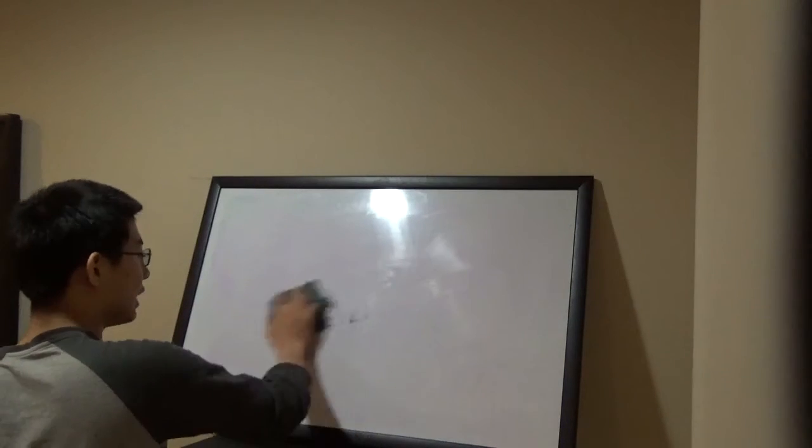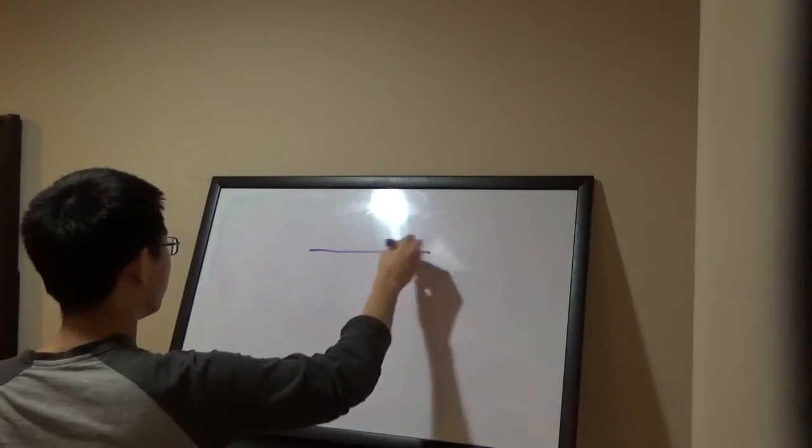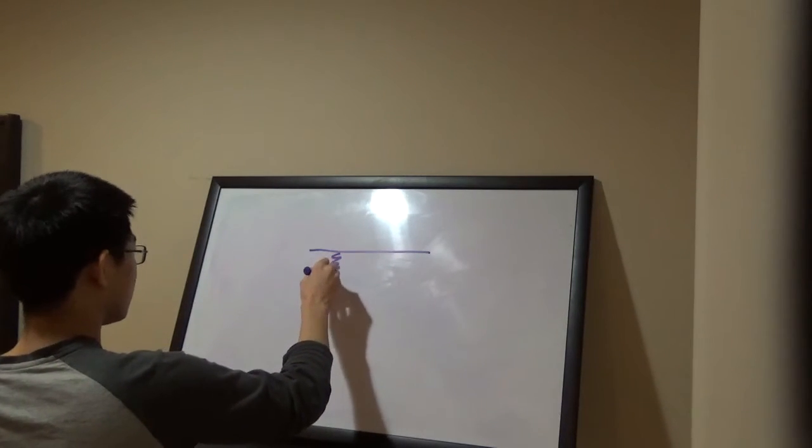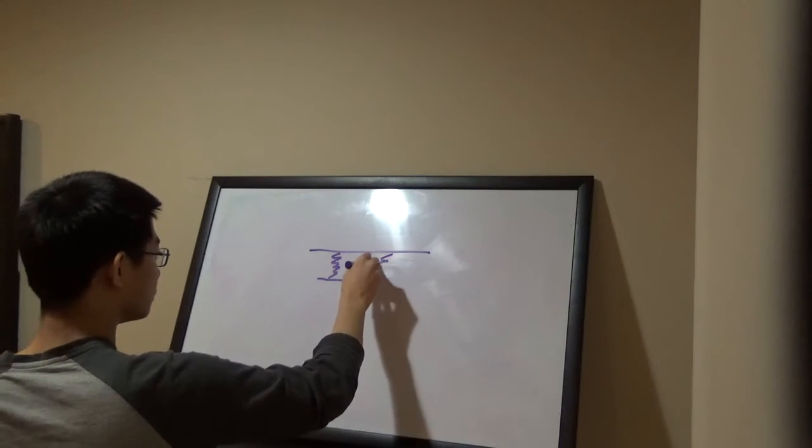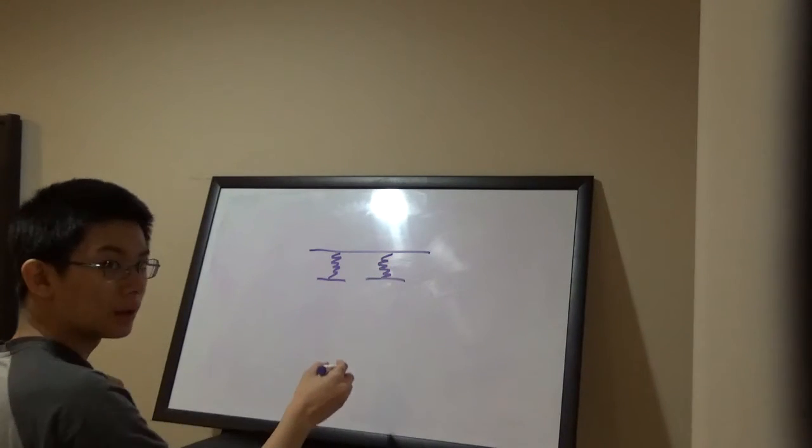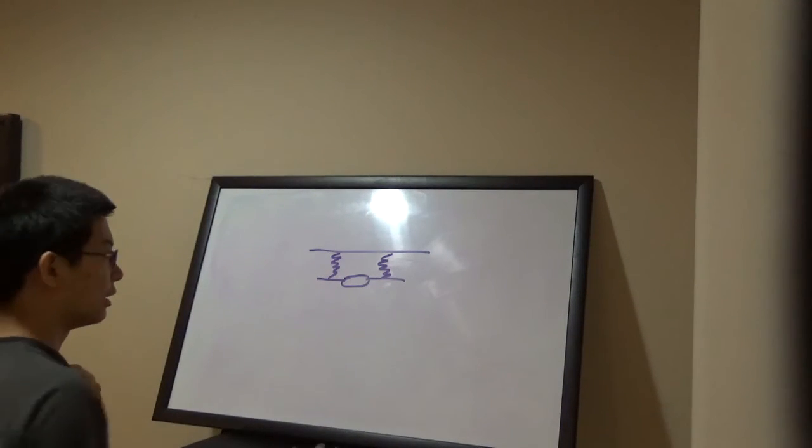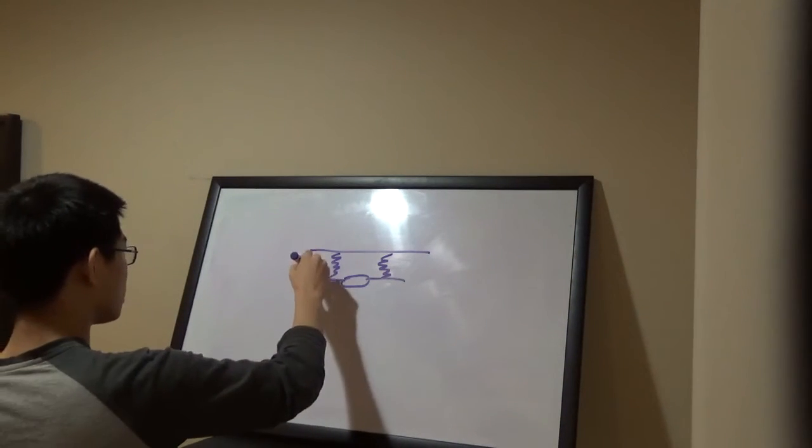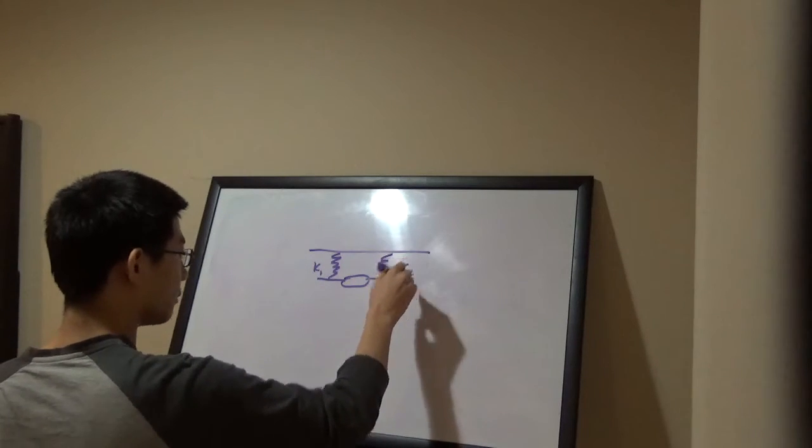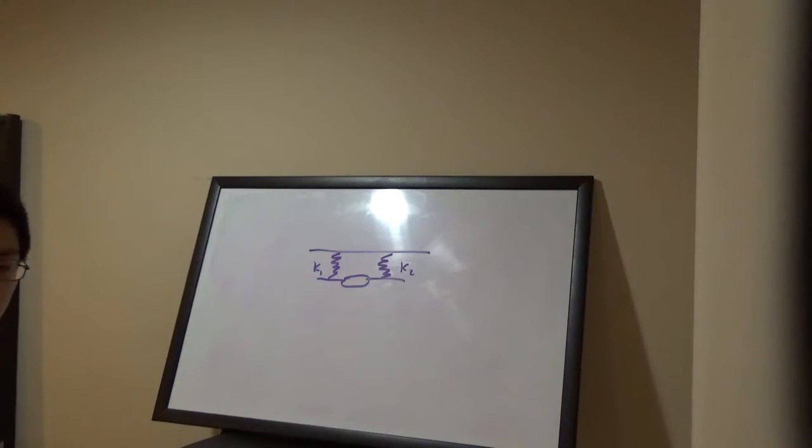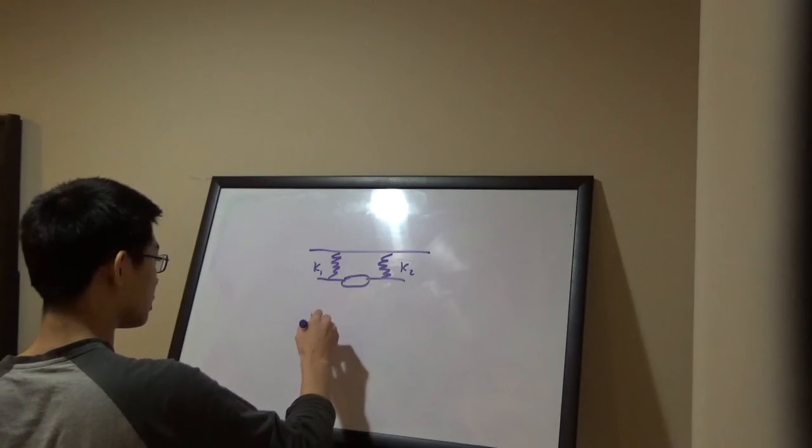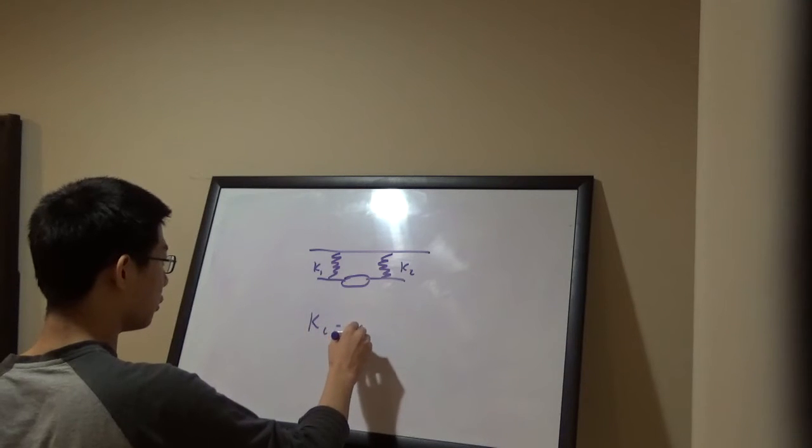Now we get to the final thing about springs, which is combining springs. Let's say I had two springs and I decided to combine them. Maybe I paper clipped them together somehow, so they are now one big spring. The spring coefficient on this is k1 and this is k2. What is the new spring coefficient? The formula for the new one, the combined, is actually just k1 plus k2.